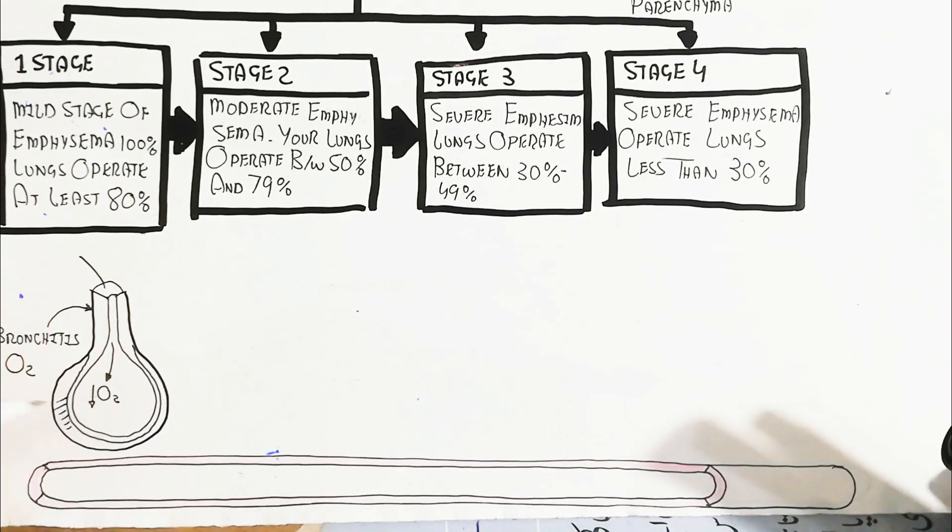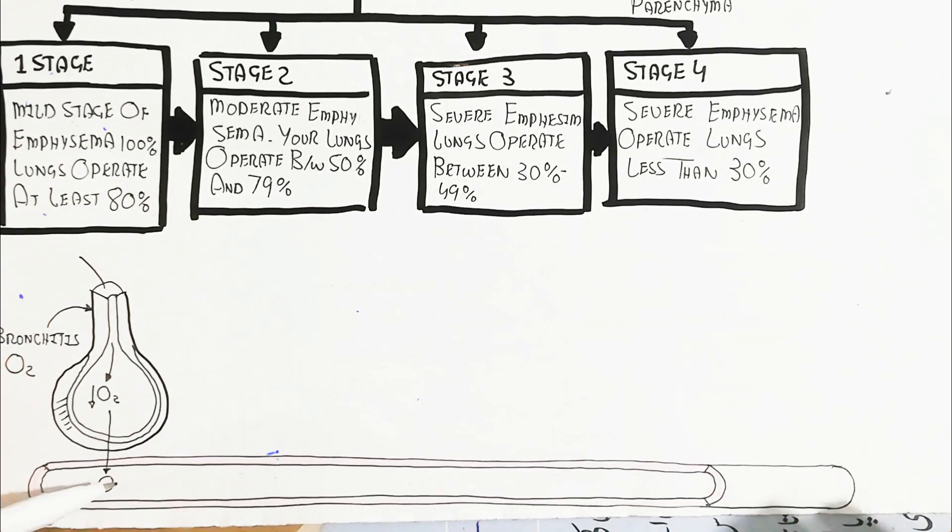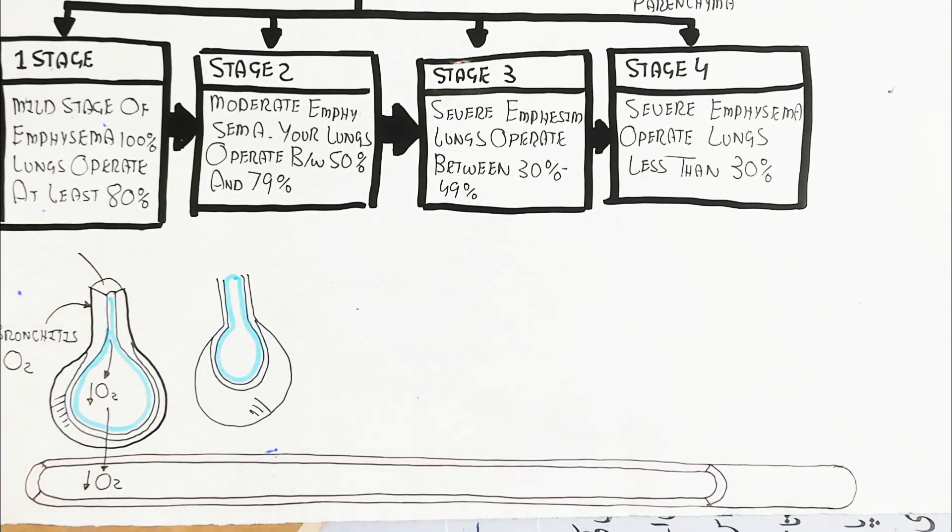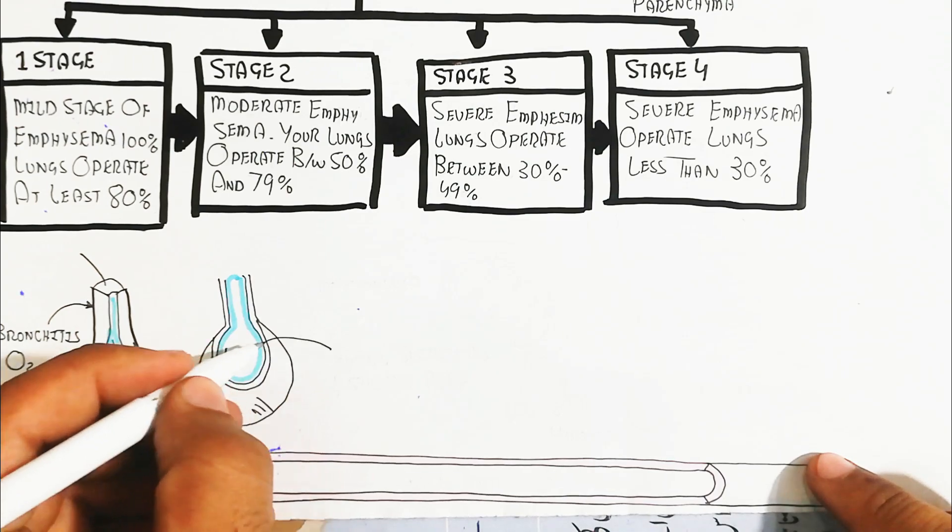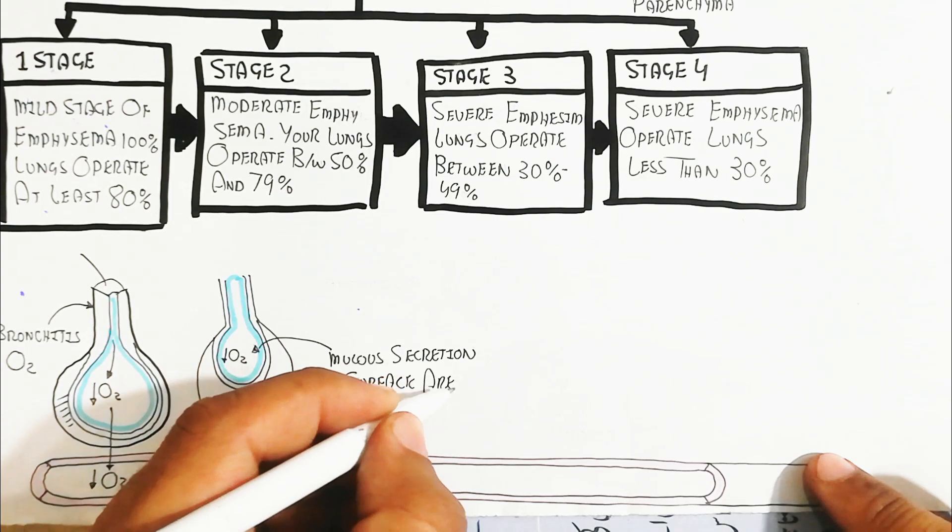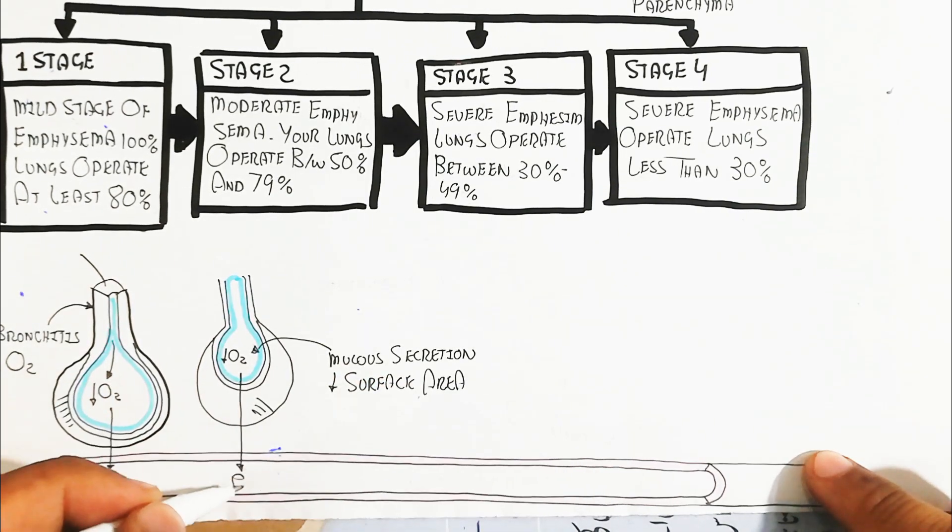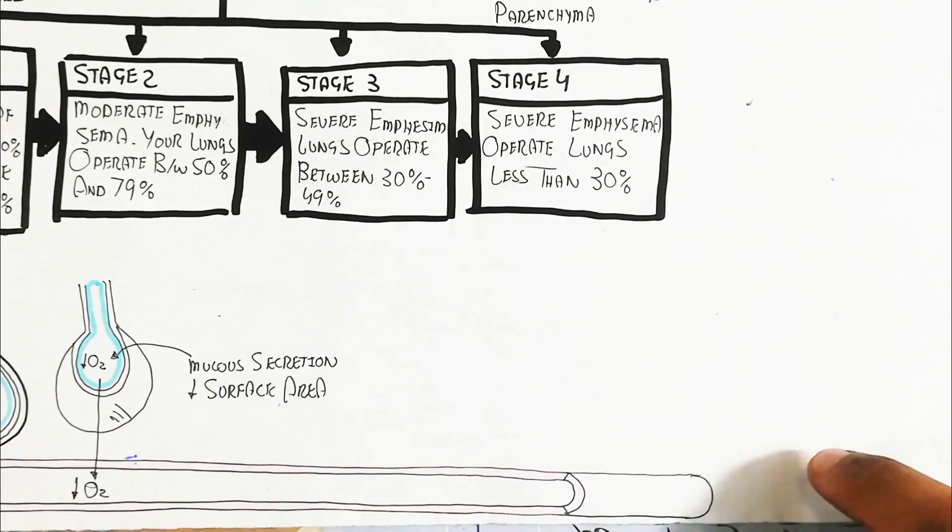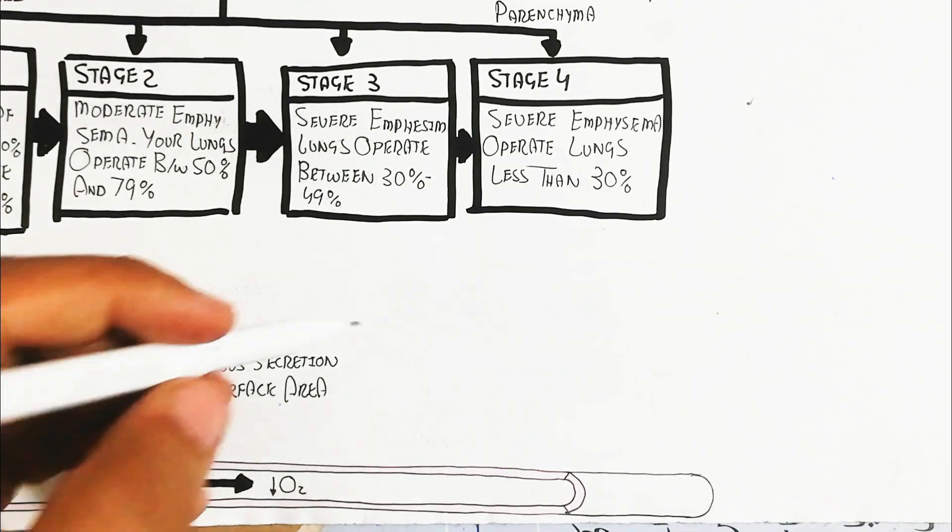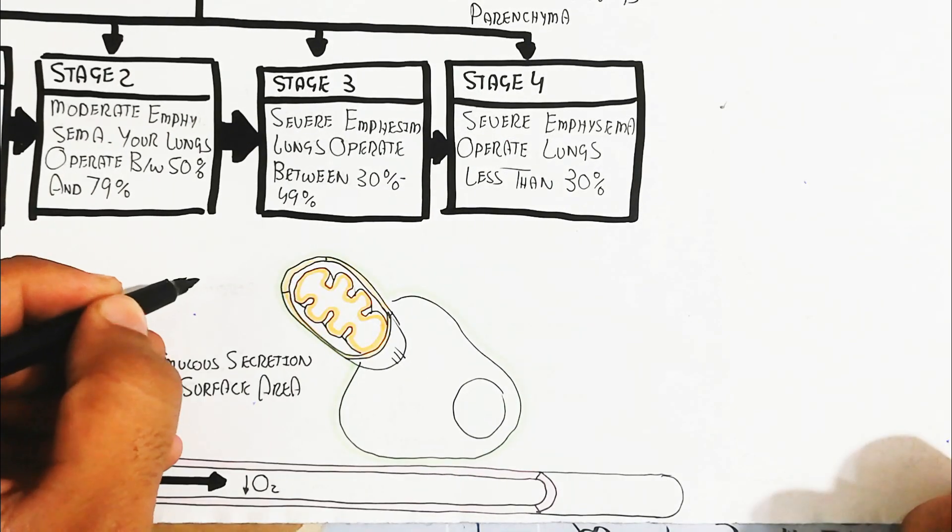Bronchitis means hardening and thickness due to mucus production, leading to less oxygen perfusion and inhalation. This decreases lung inhalation, causing hypoxemia. Mucus secretion and emphysema decrease surface area, reducing oxygen perfusion.